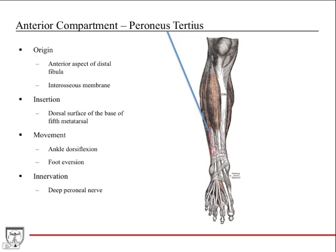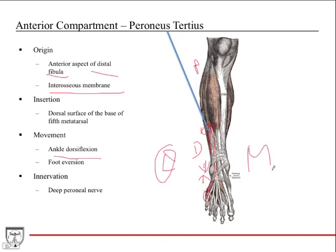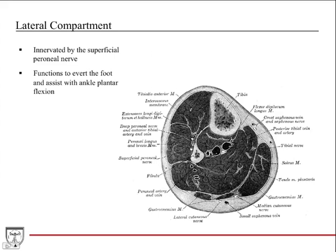Peroneus tertius is a lower-yield muscle. It originates from the anterior aspect of the distal fibula and the interosseous membrane, and inserts on the dorsal surface of the base of the fifth metatarsal. It crosses the ankle joint, helping with ankle dorsiflexion. Since it is on the lateral aspect, it also helps with foot eversion — pointing the sole of the foot laterally. Innervation is the deep peroneal nerve.